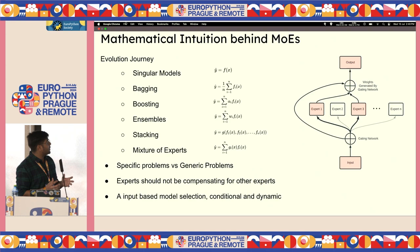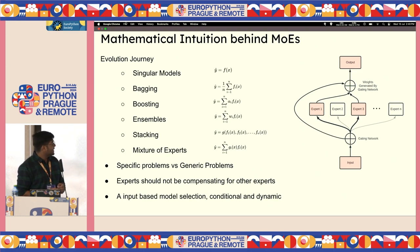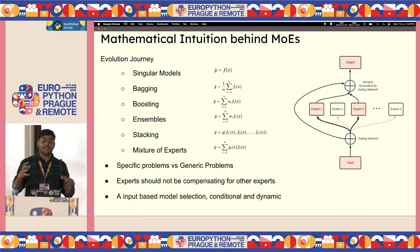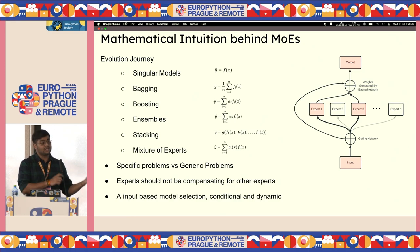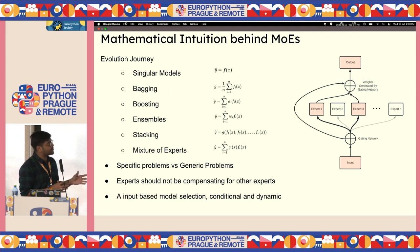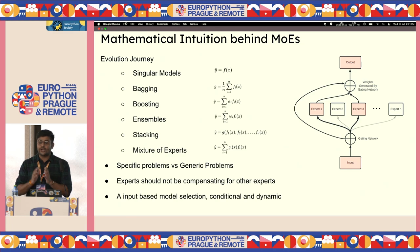A big problem with stacking algorithms is that experts start to compensate for other experts. Because they're trained together and their outputs combined, individual experts over back propagation start to compensate for what another expert could not achieve. This is not the case with mixture of experts, because each expert works in a silo — it's an individual non-interactive expert.